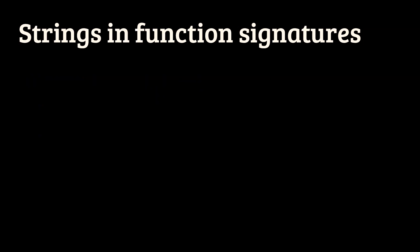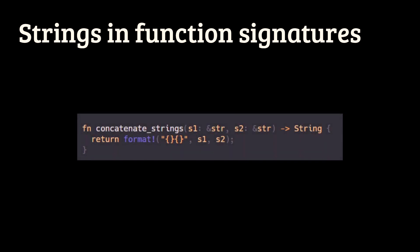Another important use case is the use of strings in function signatures. When you're designing function signatures, keep in mind that generally, strings are passed as string slices and are returned as owned strings, such as the following. This prevents unnecessary copies when passing the parameters, but also guarantees that the output string will live long enough to be received by the calling code.